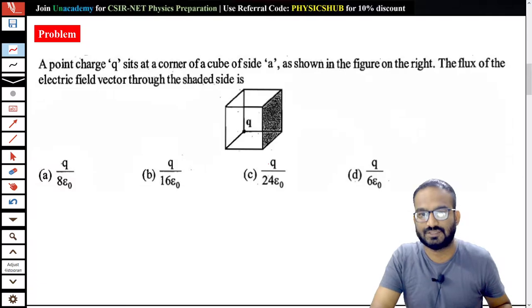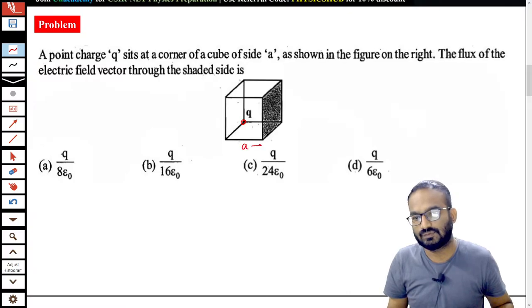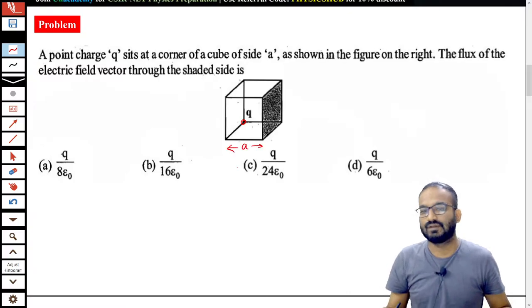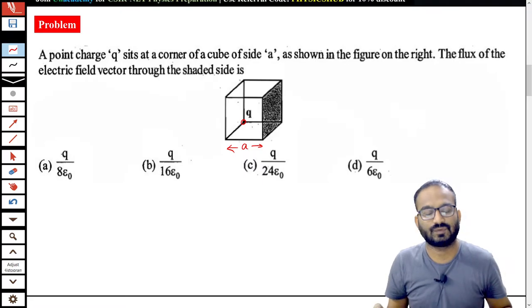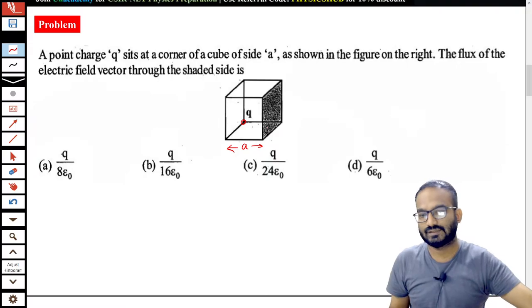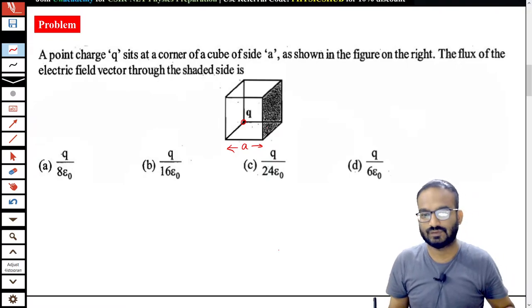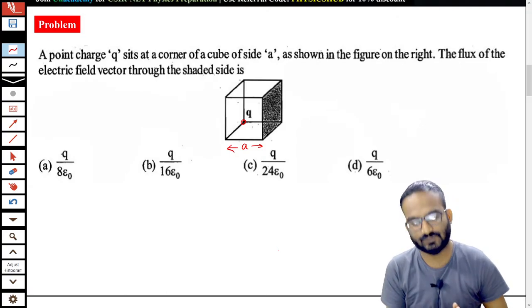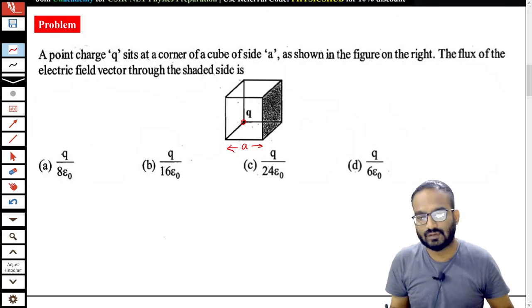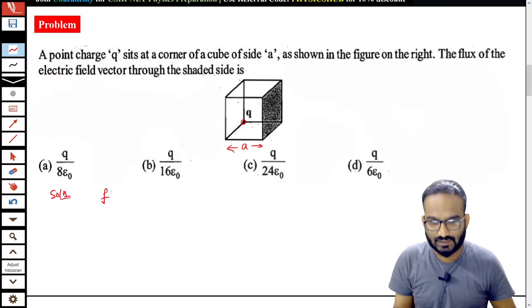This is the real question. You can see the charge Q is sitting at the corner and the cube has side A. Flux of electric field vector through this shaded area. Now you know from Gauss law that integration E dot ds equals Q upon epsilon naught. This is the formula from Gauss law. So according to Gauss law, flux is Q by epsilon naught.